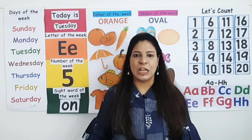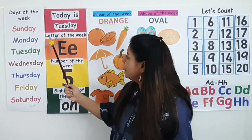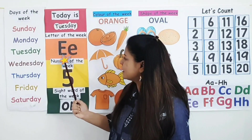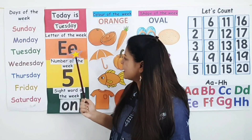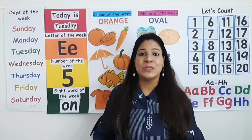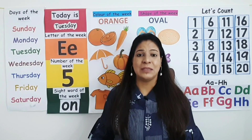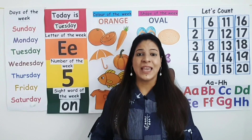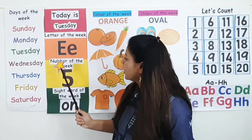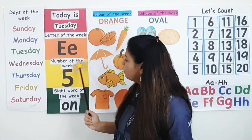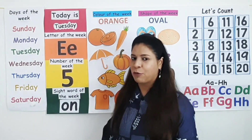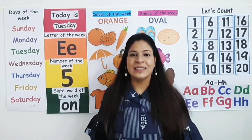Now let's see the letter of the week. Letter of the week is letter E. This is uppercase letter E. This is lowercase letter E. Letter E makes the sound E. Now let's see the number of the week. Number of the week is number 5.